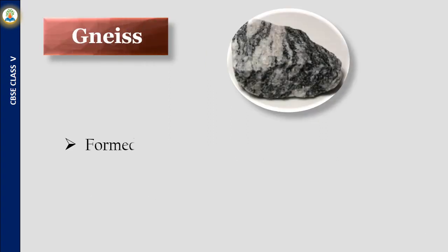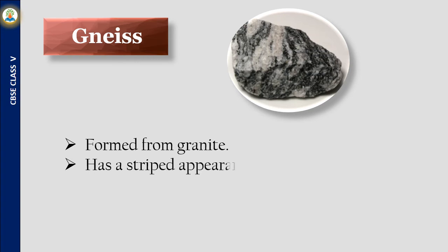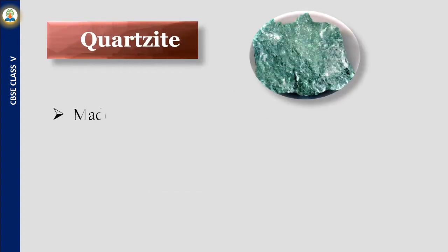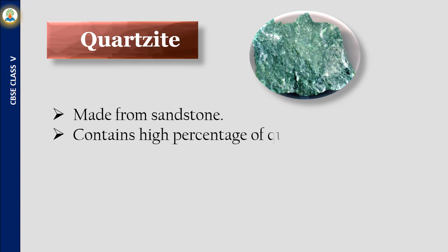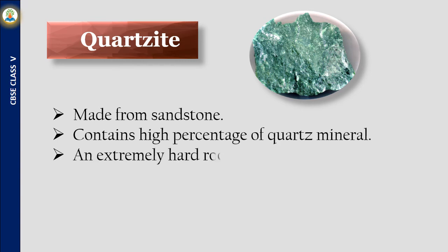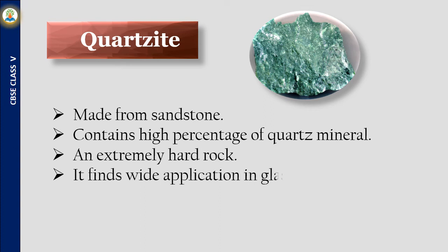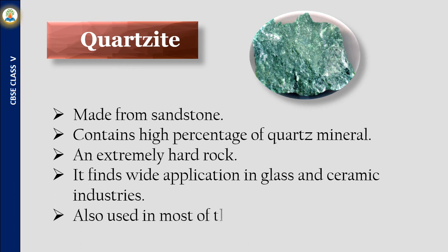Gneiss is formed from granite and has a striped appearance, used as a building stone. Quartzite is made from sandstone and contains a high percentage of quartz mineral, making it an extremely hard rock. It finds wide application in glass and ceramic industries and is also used in most watches and jewelry.